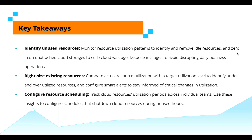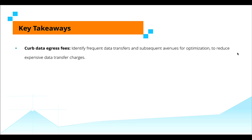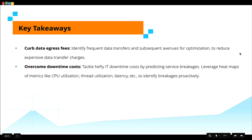Third, configure resource scheduling: monitor the utilization periods of cloud resources across individual teams using intuitive heat maps, then leverage these insights to configure schedules that shut down cloud resources during non-business hours. Fourth, curb fees associated with data egress: identify frequent data transfers and avenues for optimization — on-premises applications that frequently access cloud data can be migrated to the cloud, organizations can establish centralized storage to avoid frequent transfers between different storages, and also purge stale data periodically to reduce cloud storage costs.